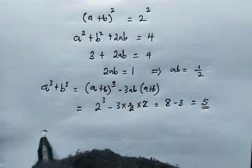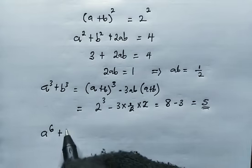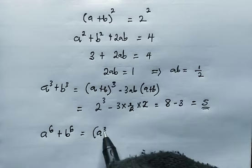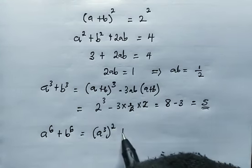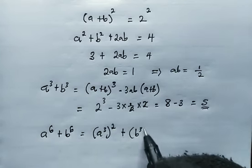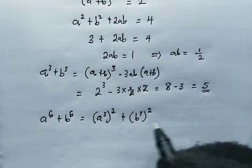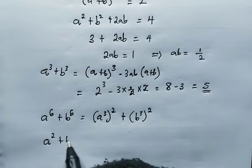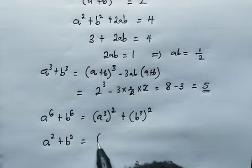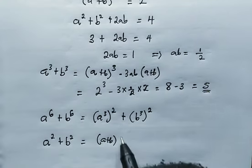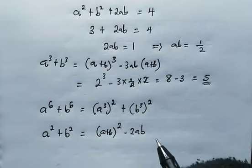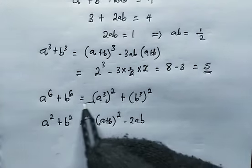Then what of a to the power of 6 plus b to the power of 6? Remember, we can write this as a cubed squared plus b cubed squared. But before we proceed, take note, a squared plus b squared equals a plus b squared minus 2 times a times b is a wonderful property.